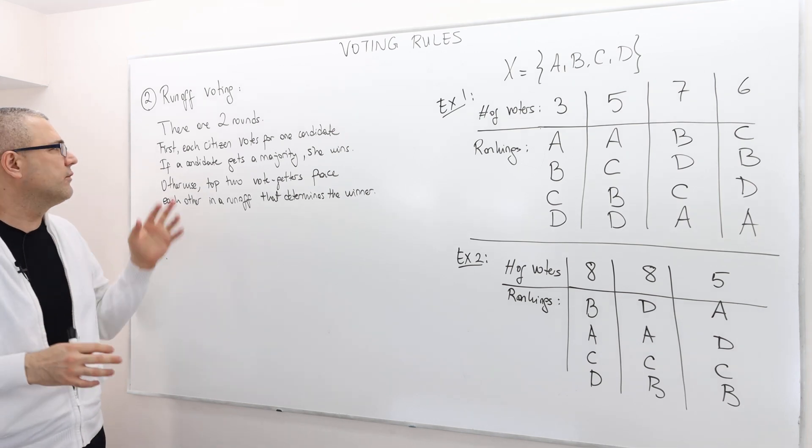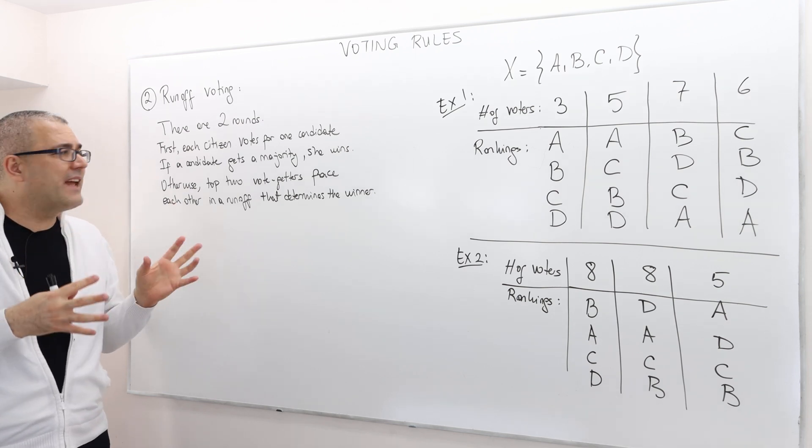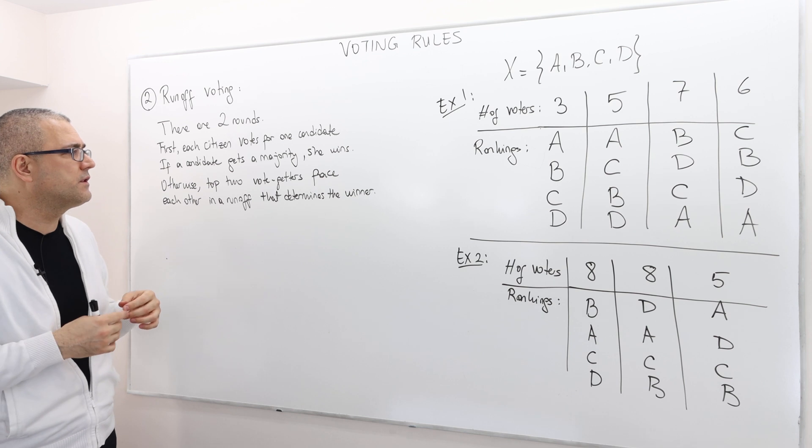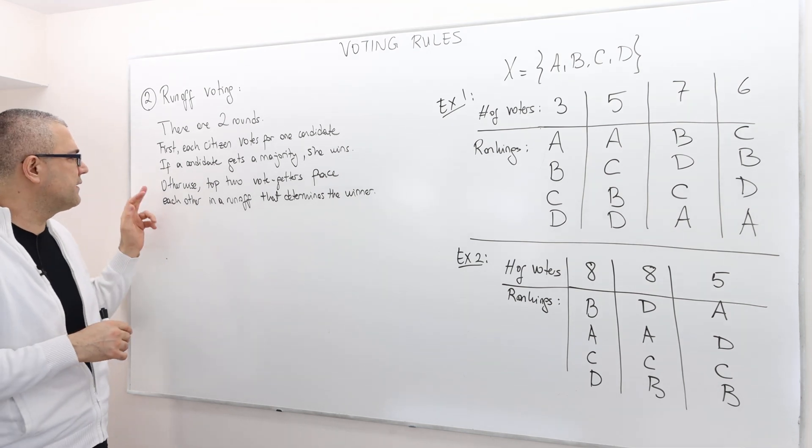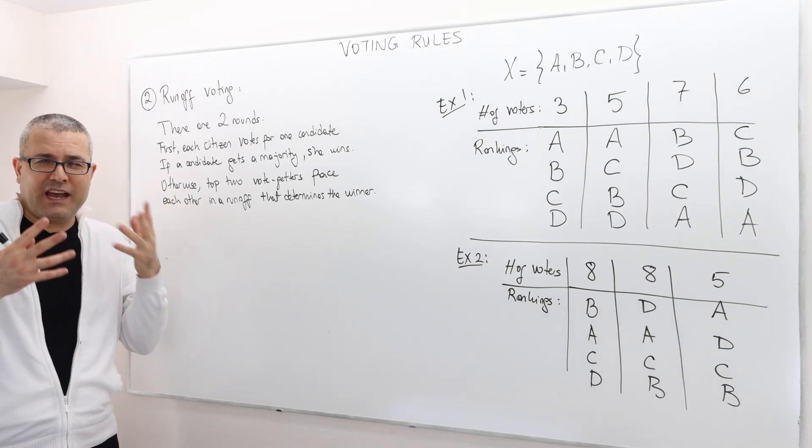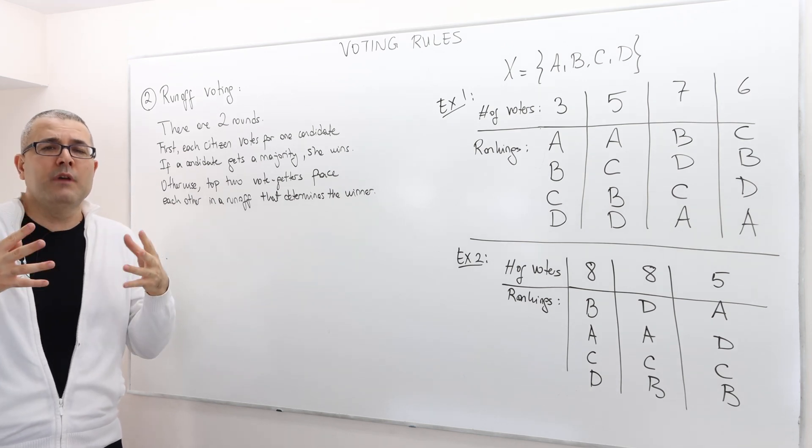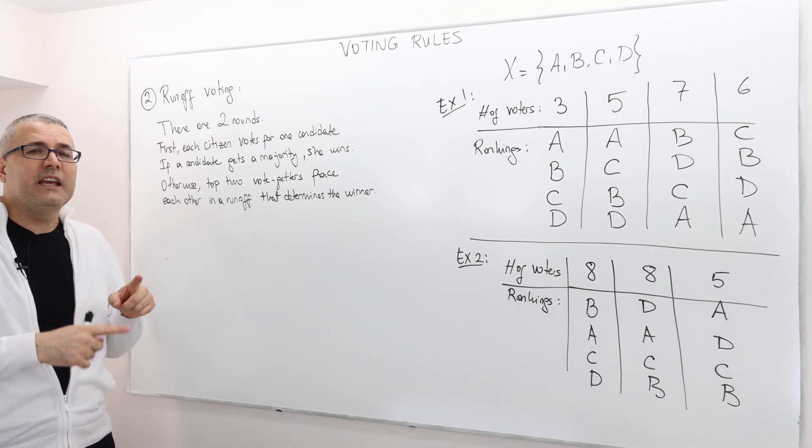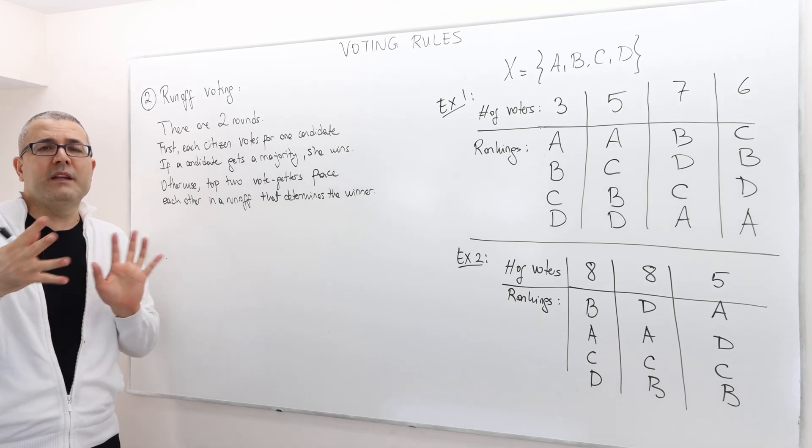In the first round, each citizen votes for one candidate. If a candidate gets a majority, more than half of the votes, then this candidate wins. However, if nobody gets the majority, then the top two vote getters are going to face each other in the second round, usually called runoff, which determines the winner.